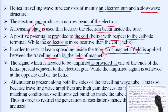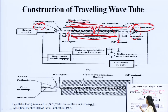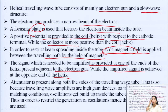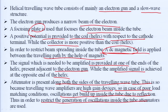The signal which needs to be amplified is provided at one end of the helix, present adjacent to the electron gun, while the amplified signal is achieved at the opposite end of the helix. The attenuator is present along both sides of the travelling wave tube because the travelling wave tube amplifies — it is a high gain device. In case of poor load matching conditions, oscillations build up inside the tube due to reflection, so attenuators are used to restrict the generation of oscillations inside the tube.